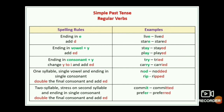Spelling rule two: words ending in vowel plus Y — add ED. Observe children: 'stay' — Y is the last letter, and Y is before a vowel A. So for these types of words we add E-D only. Stayed. 'Play' — last letter is Y, Y before vowel A, so we add ED. Played.